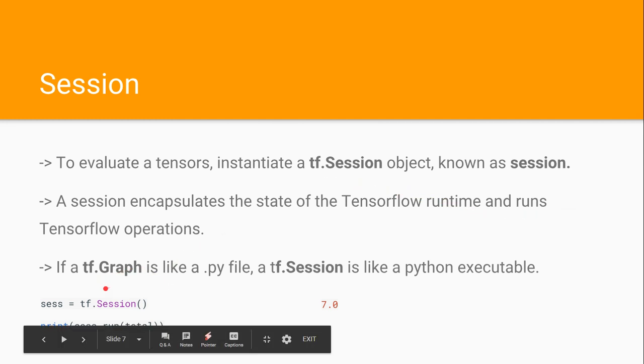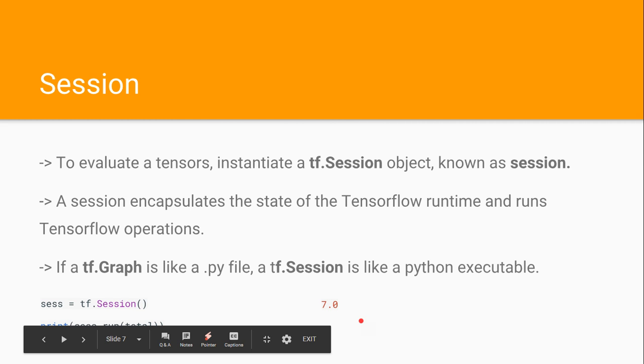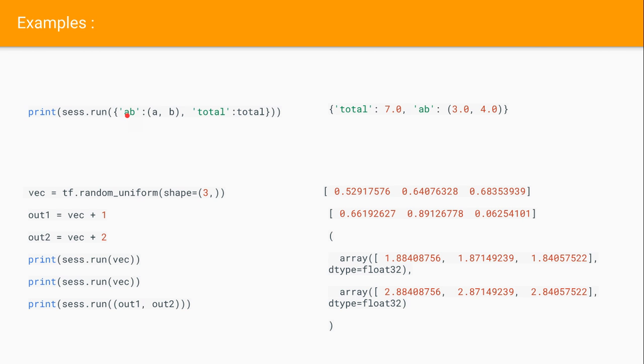You can run your computational graph with the help of session.run(total), which gives an answer of 7.0. This is an example of session in which you can run session directly with the help of a dictionary. Session.run, you pass a, b, and total variable, getting total 7.0, a 3.0, b 4.0.